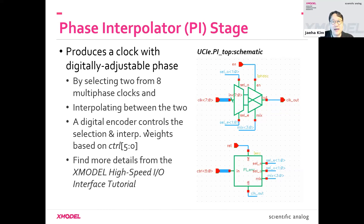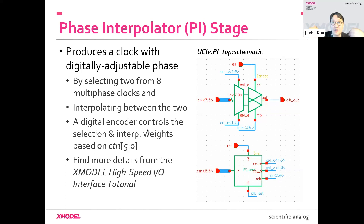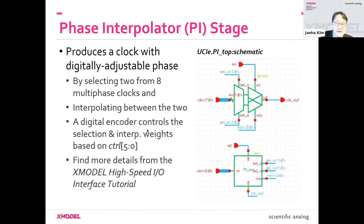You can adjust the interpolation weight to generate multiple phases in between. Depending on which clock phase you choose out of eight and the interpolation weight you use, you can generate a clock phase whose value is digitally adjustable spanning the whole 360 degrees.